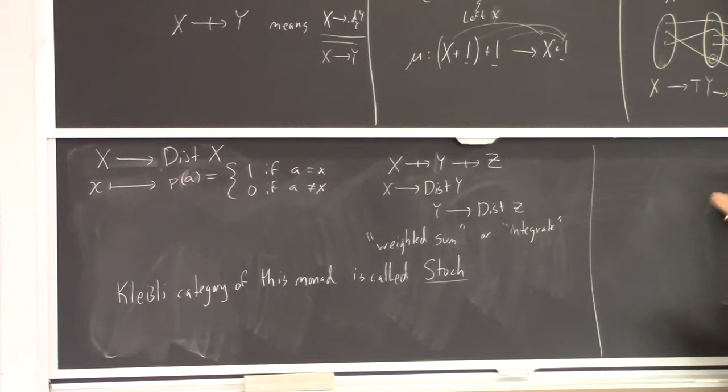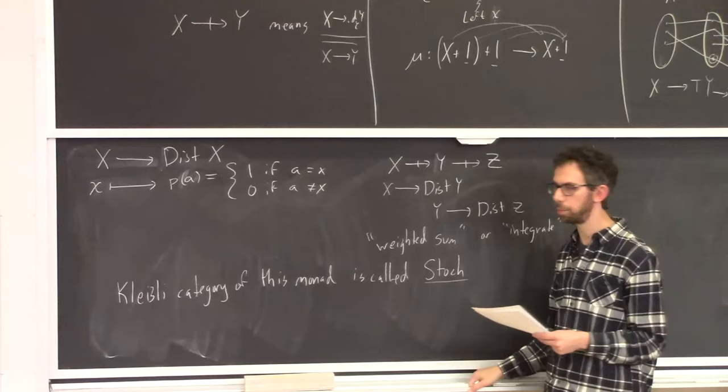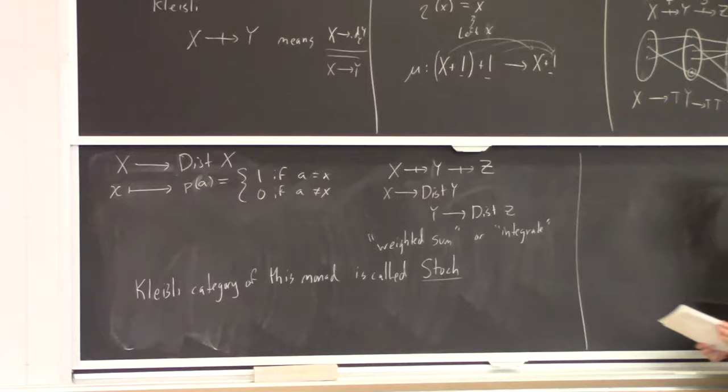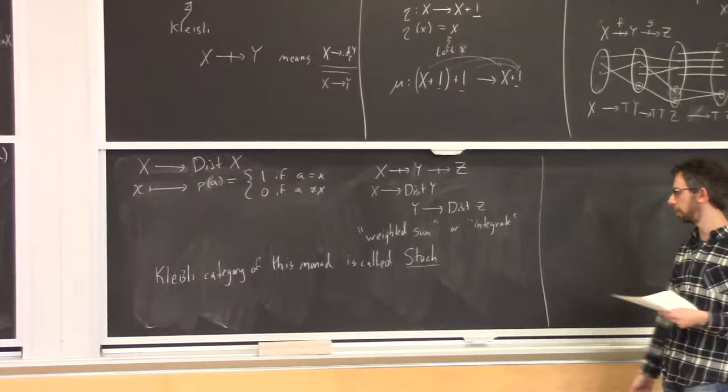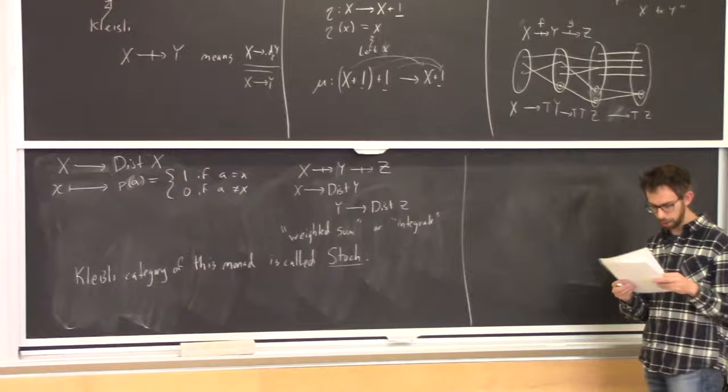This is an active area of research in applied category theory, thinking about what axioms probability theory satisfies from the point of view of commutative diagrams or string diagrams instead of all the measure theory — and that's something you could talk to Paolo about.